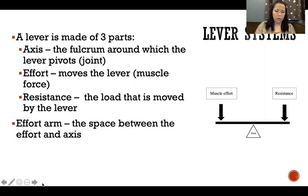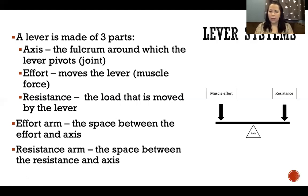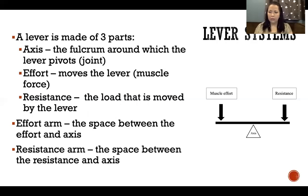The effort arm is the distance between the axis and the application of the muscle effort. And the resistance arm is the distance between the axis and the location of the resistance. In the mechanical advantage video, I talked about where exactly those are and what that means.